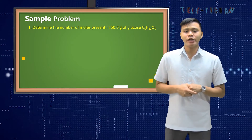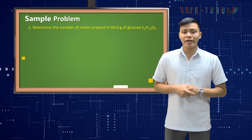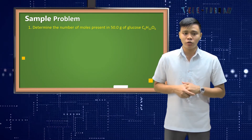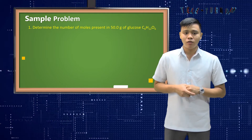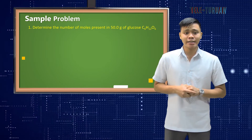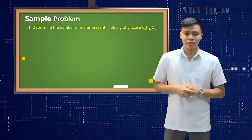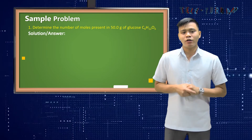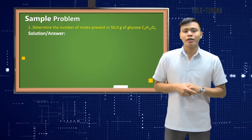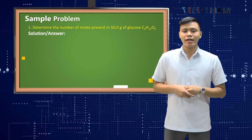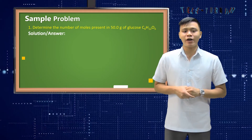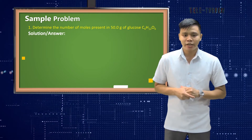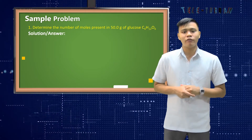Number one: determine the number of moles present in 50.0 grams of glucose, or C6H12O6. Here's the solution. First, compute for the molar mass — it will serve as the conversion factor to compute for the number of moles present in 50 grams of glucose.